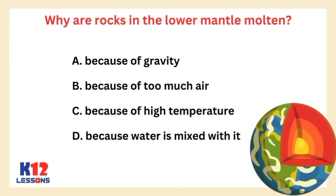Why are rocks in the lower mantle molten? A. Because of gravity. B. Because of too much air. C. Because of high temperature. D. Because water is mixed with it.